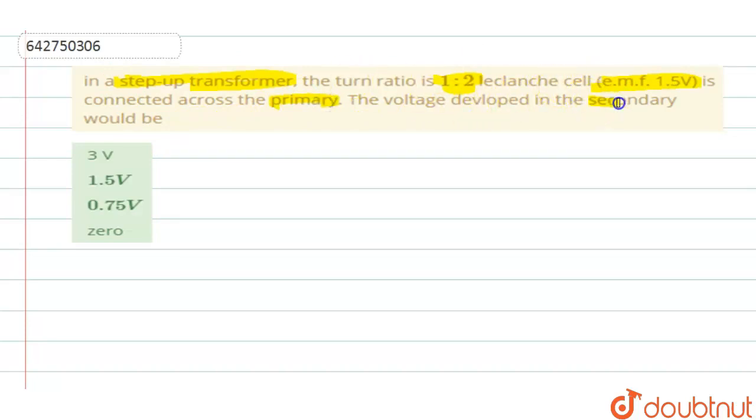So this is a step up transformer which means the voltage will be increased, raised compared to the primary voltage. Which means you can say that voltage across primary will be less than the voltage across the secondary.